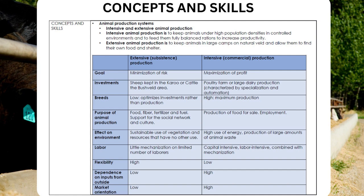Intensive animal production is to keep animals under high population densities in controlled environments and to feed them fully balanced rations to increase productivity. Extensive animal production is to keep animals in large camps on natural veld and allow them to find their own food and shelter.